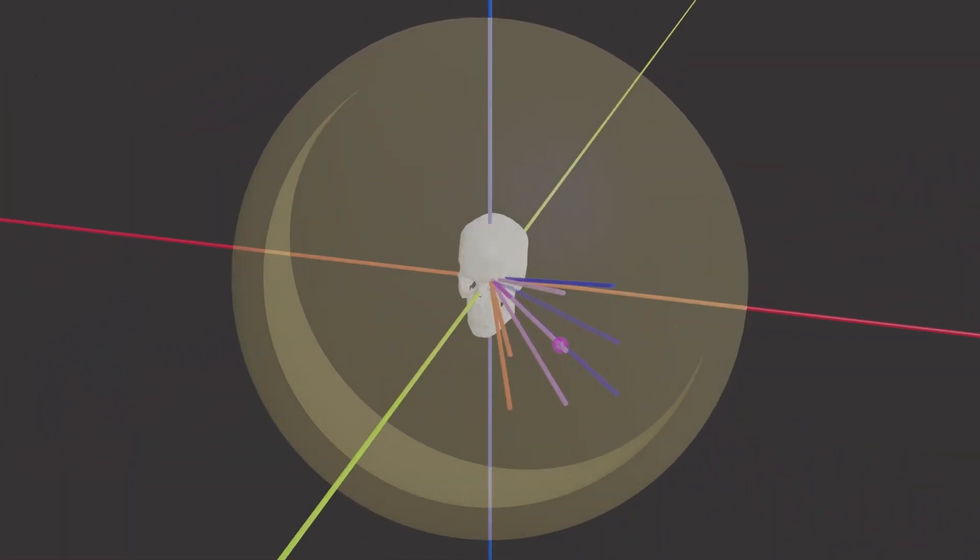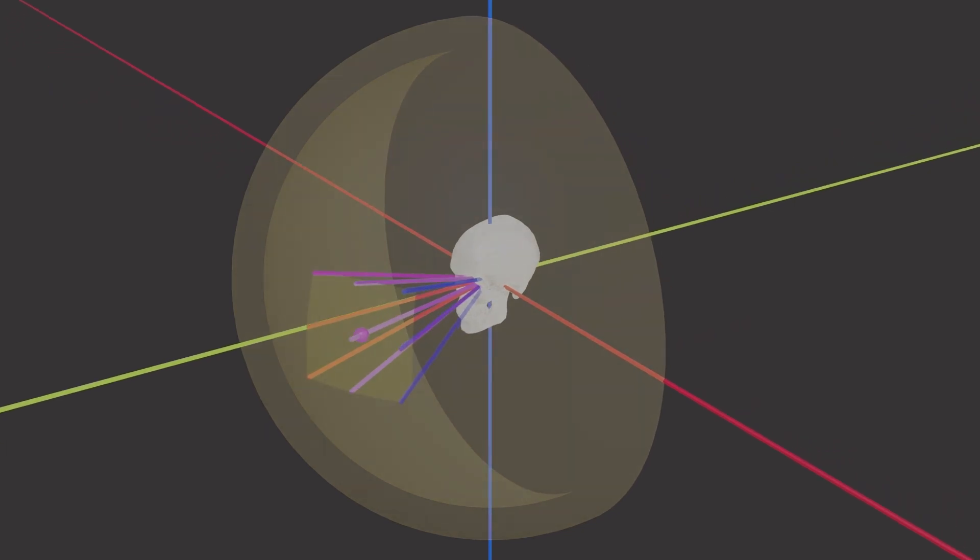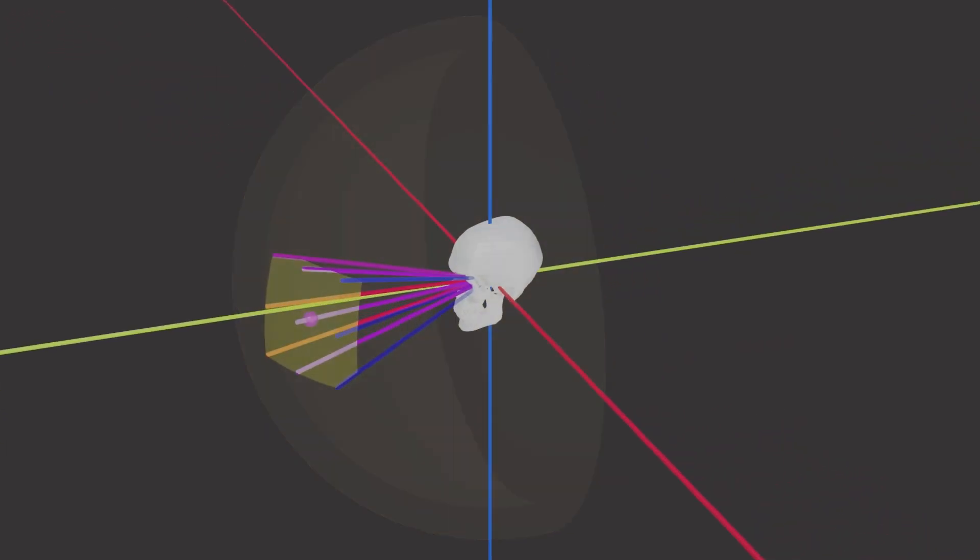Everybody's eyes are a certain size because they have to function physiologically, so your eye fissure length is very similar between individuals — similar enough that we can use an average value. If we have a photograph of you, we can measure that distance and use it as a scale to determine the focus distance the camera was set at.